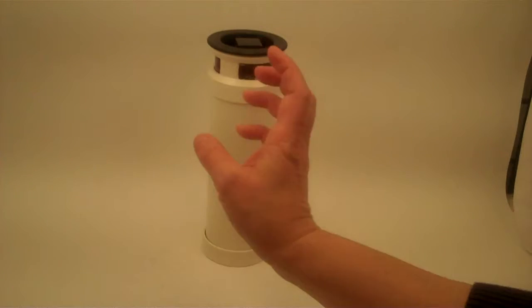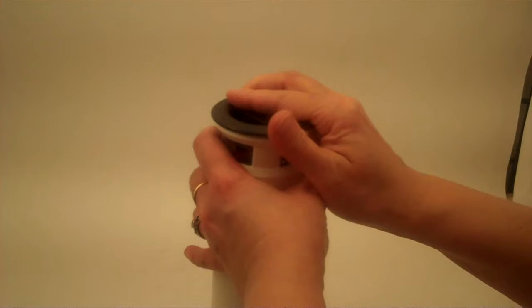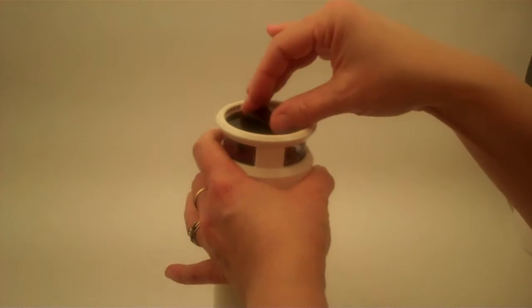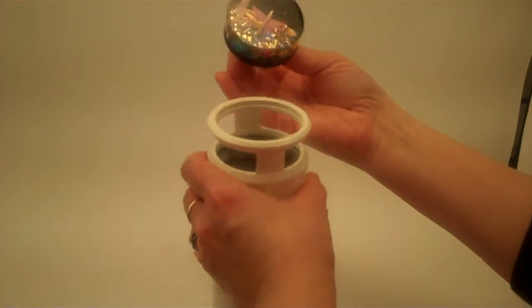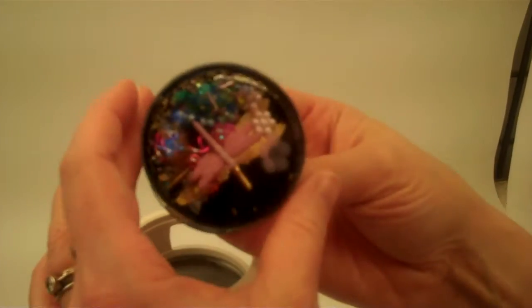Now, the interchangeable kaleidoscopes feature a snap ring at the top that you push up, and it will unlock, and then you can take out the beautiful cell within the kaleidoscope and put more in later.